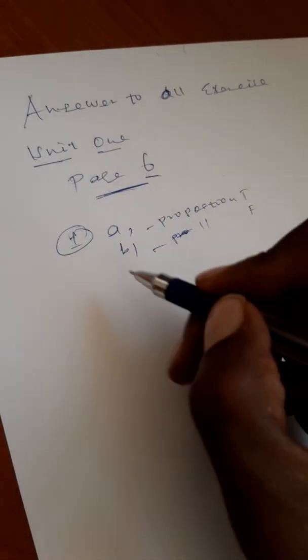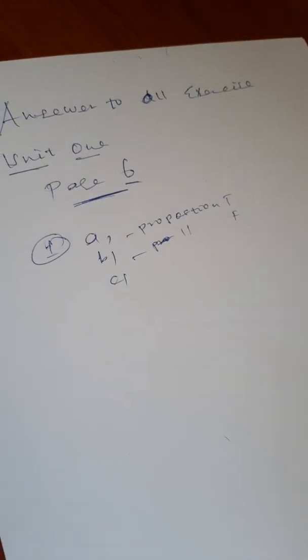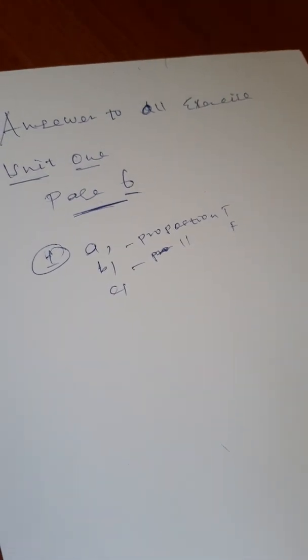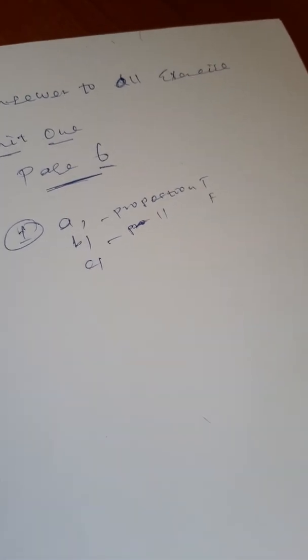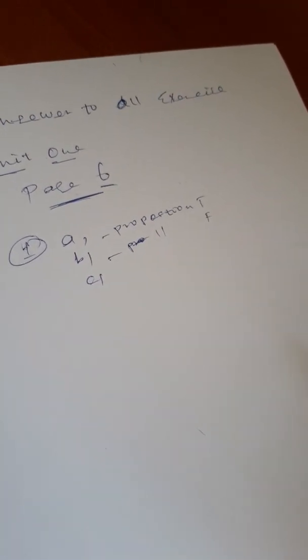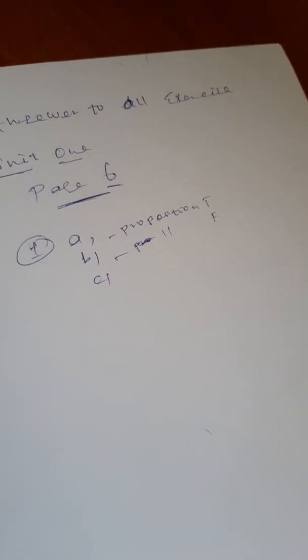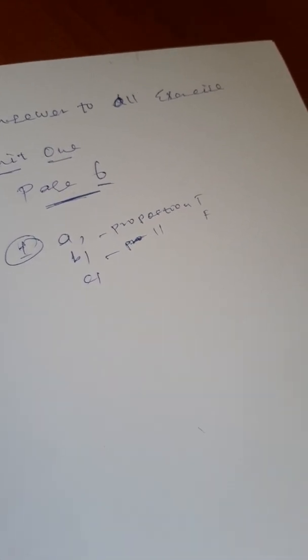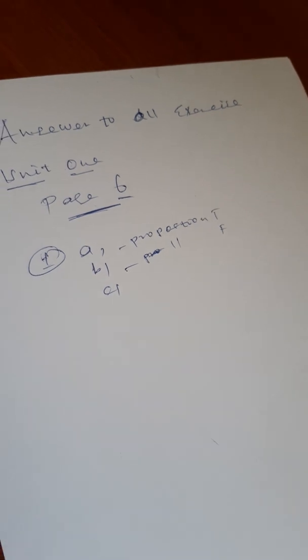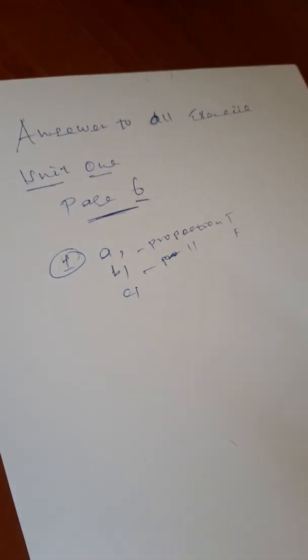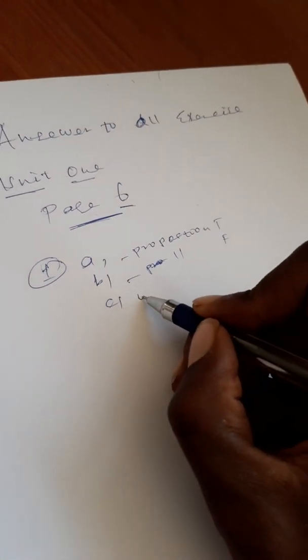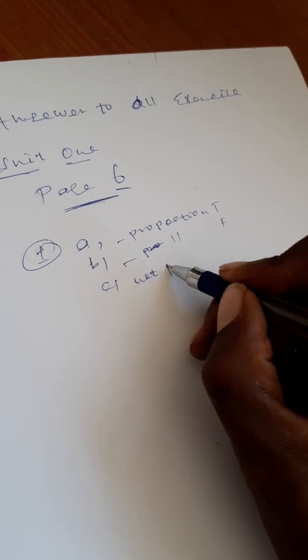x squared minus 4 is equal to zero. This one — we cannot calculate or determine a fixed truth value, so it is not a proposition. It is a sentence but not a proposition.